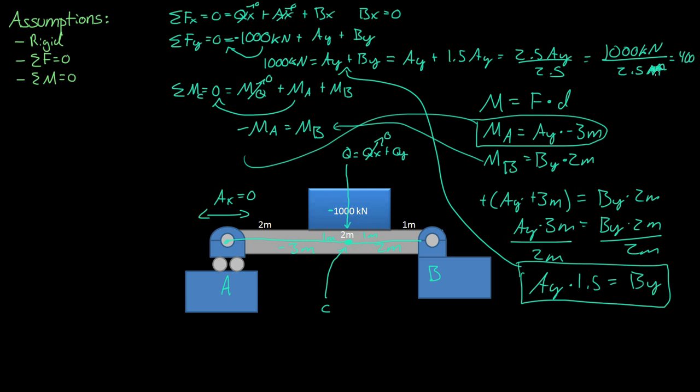and we get approximately 400 kilonewtons. So Ay equals 400 kilonewtons, and By must equal 1.5 times Ay, or 600 kilonewtons.